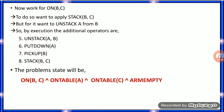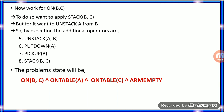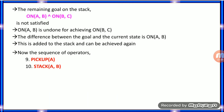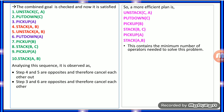Next, going for the second option — on(B, C) — the same procedure continues. The resulting state will be: on(B, C), on_table(A), on_table(C), and arm empty. The remaining goal stack is resolved, and the sequence of operators applied is pickup(A) and stack(A, B).